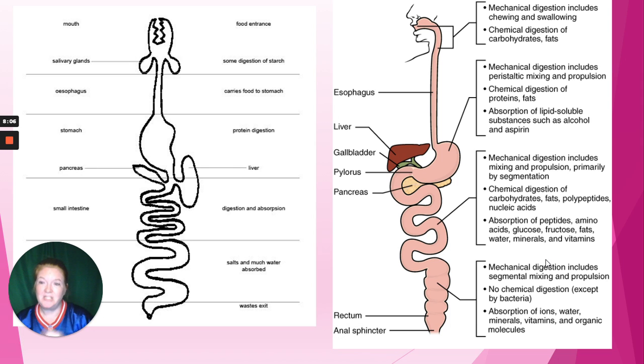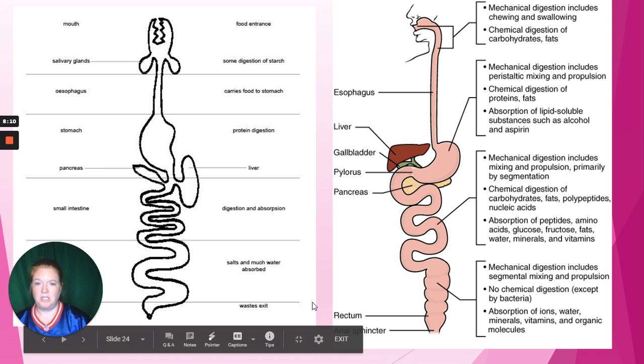Here you can see the main organs of the digestive system as food moves through, showing where there is mechanical and chemical digestion all the way through the digestive tract. Remember, peristalsis — that squeezing — is still considered mechanical digestion.